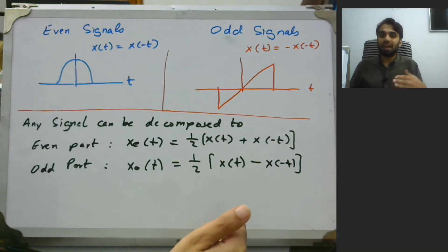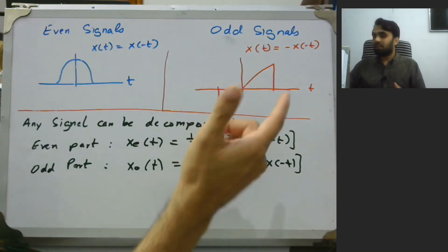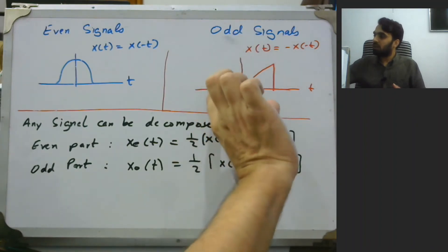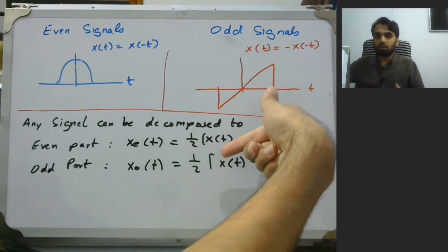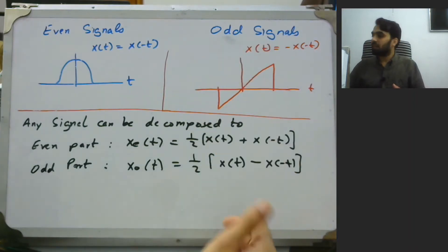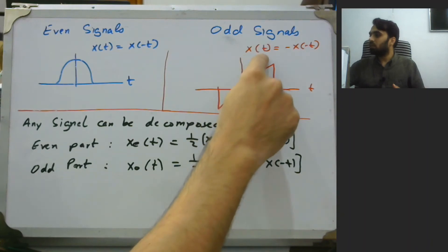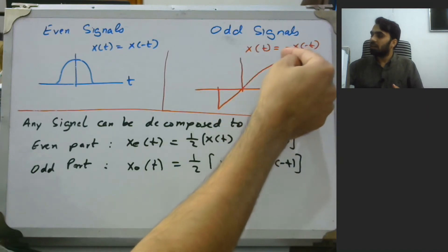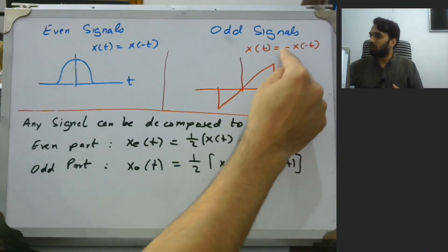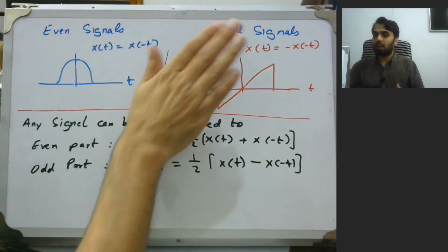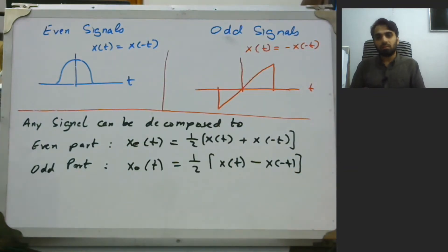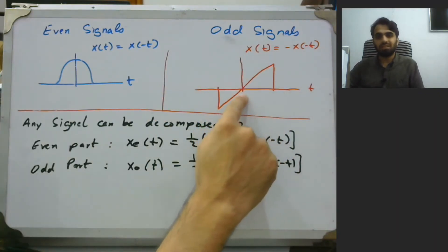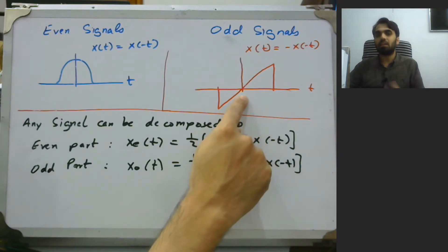For odd signals, the signals are anti-symmetric around the origin. If you have this signal, you would have to flip it and then invert it to get back your original signal — that is, x(t) = -x(-t), a mirror image followed by inversion in the amplitude scale. An important consideration is that for odd signals, the signal must pass through zero. If the signal is not passing through zero, it cannot be an odd signal.